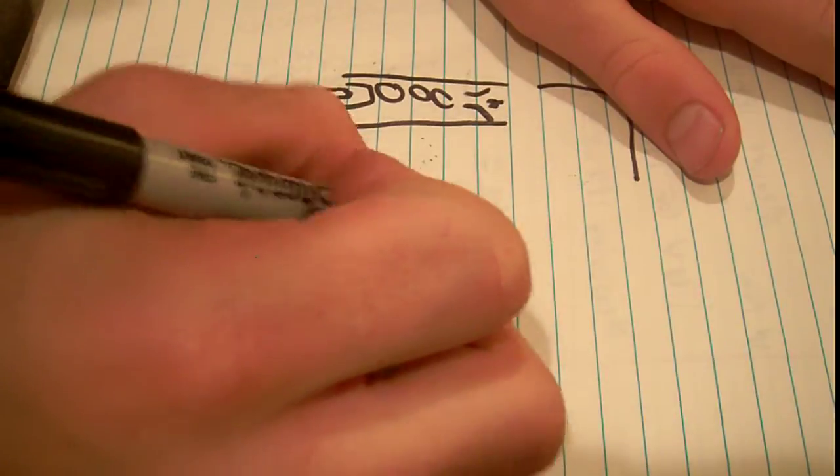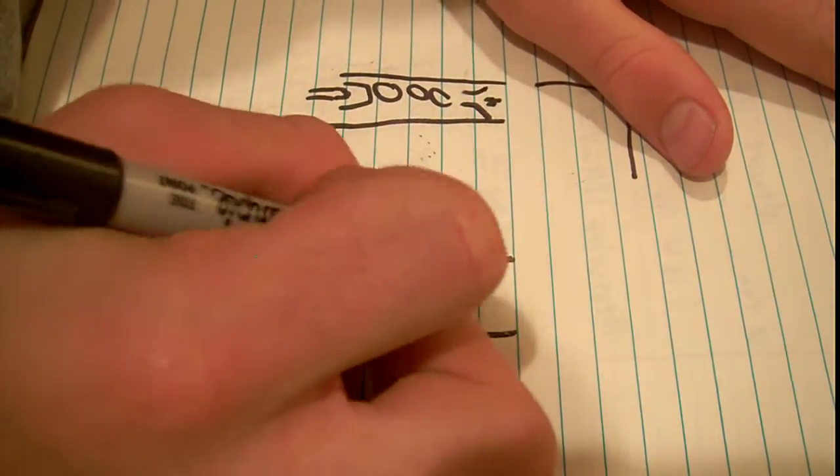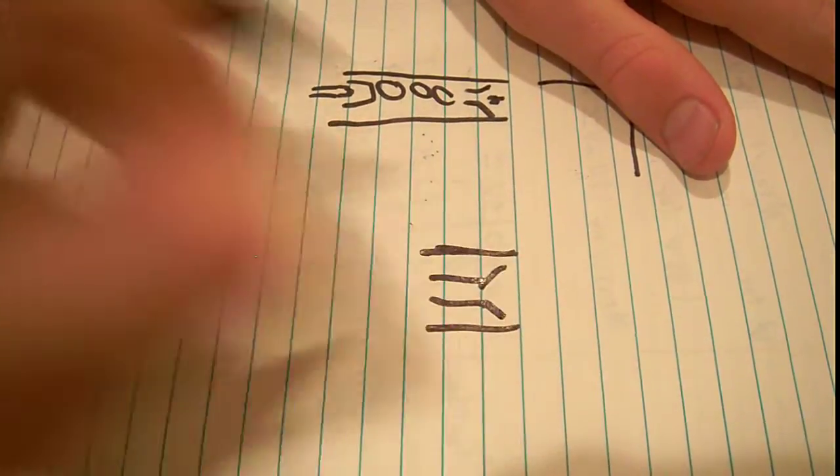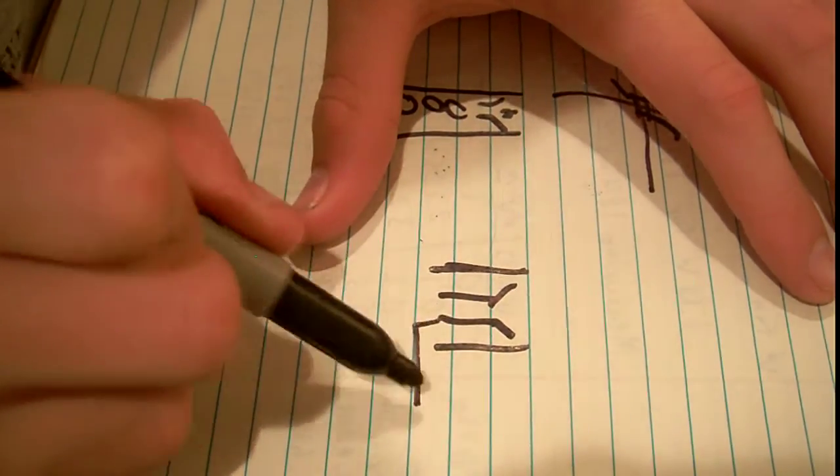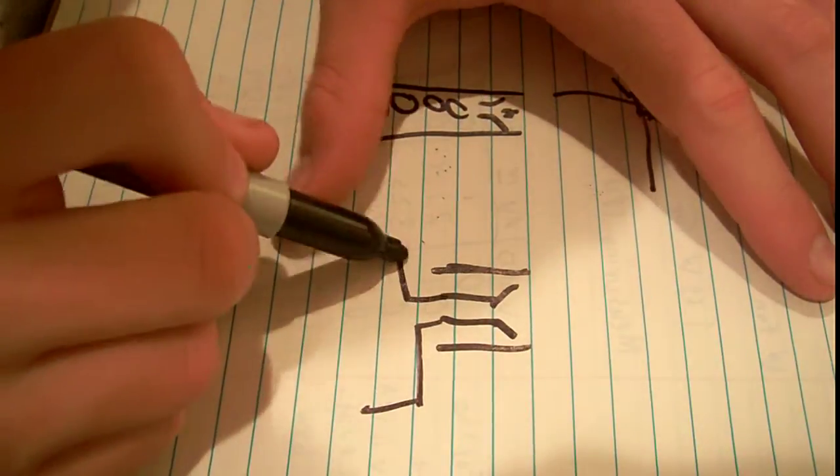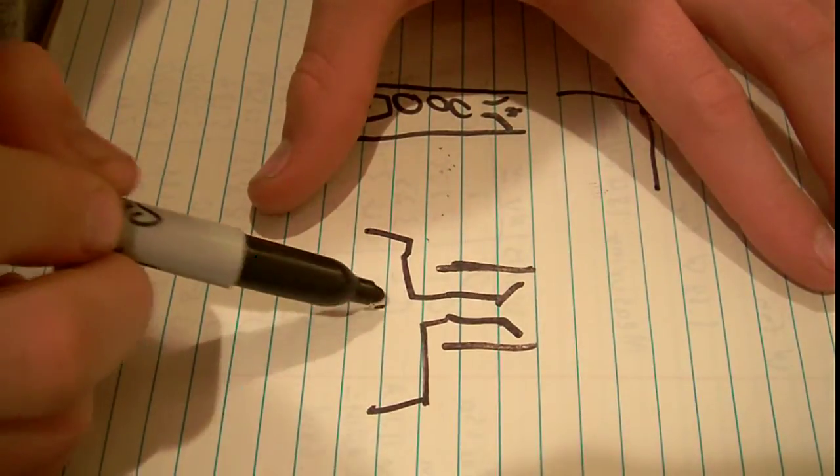So the way it works is that if you were to draw up close, if this is the end of the gun, here's one of the deflection plates. What would happen is you would have a potential between them, right? So this is the beam here, represented by these dashes.